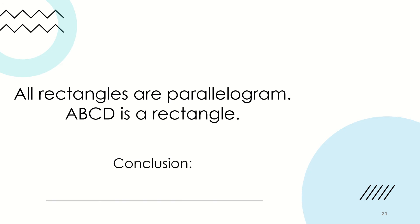Let us have another example. From the general statement 'all rectangles are parallelograms,' this statement presents a general truth about parallelograms and is considered the hypothesis of the whole argument. Moreover, 'ABCD is a rectangle' is a specific example. So from general to specific, we may conclude that ABCD is a parallelogram.